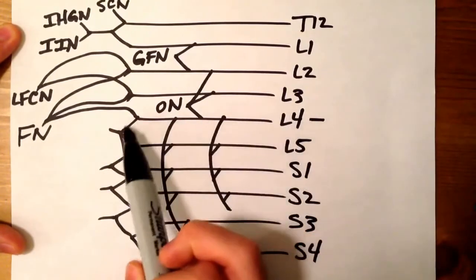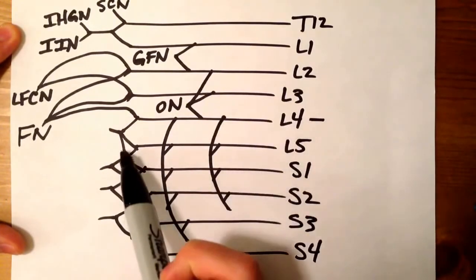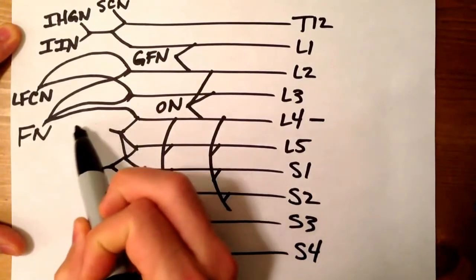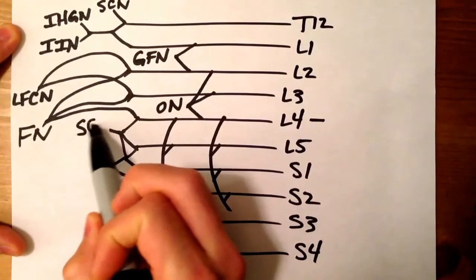Now between L4 and S1, because there's that little branch that connects to S1, that is going to be your superior gluteal nerve.